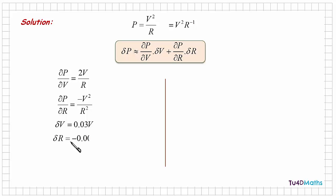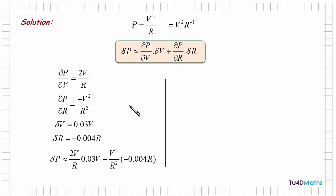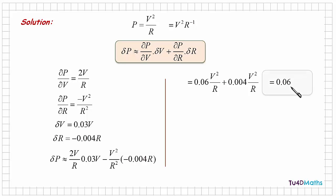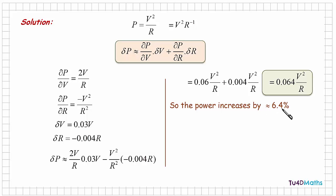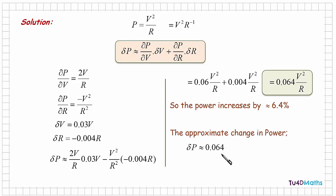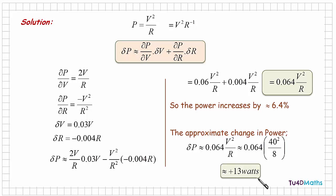And the change in resistance is a decrease of 0.4%, which is minus 0.004 times r. So if we substitute the small changes and the partial derivatives into the overall approximate change in power, and multiply and add, we get 0.064 v squared over r. So in other words, the power increases by approximately 6.4%. The overall approximate change in power is 6.4% of v squared over r, and substituting 40 for the voltage and 8 for the resistance, we get approximately an increase of 13 watts.